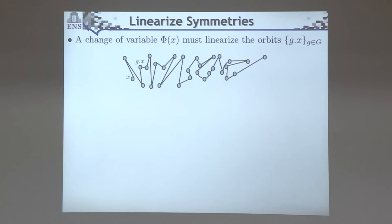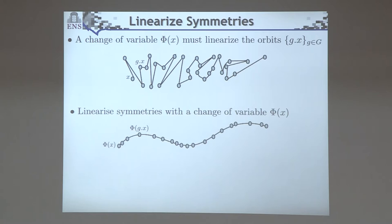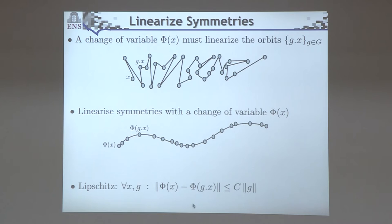If g is a translation, the representation shouldn't change. For deformations: a deformation translates the image by tau(u) depending on position. If tau is constant it's just a translation; if tau varies, the amount of deformation is measured by the maximum gradient of tau. What you want is that phi of the deformed X has distance from phi(X) of the order of the deformation magnitude. Now the first idea in physics or mathematics would be to use the Fourier transform — translating a signal just changes the phase, and taking the modulus of the Fourier transform gives translation invariance. But why doesn't anyone use Fourier for image classification? If you deform a signal, low frequencies don't move much, but high frequencies move by a large amount, making the Fourier domain distance large even for small deformations. Fourier is unstable to deformation.